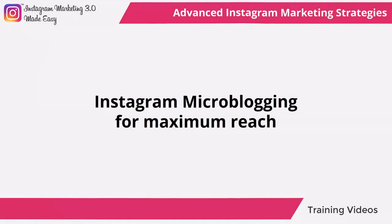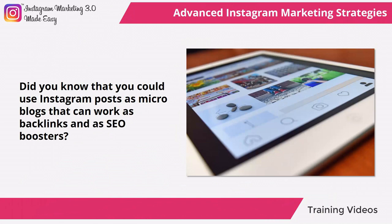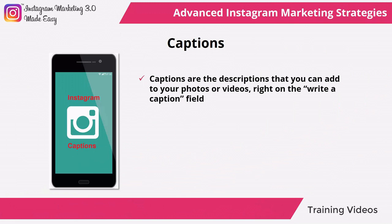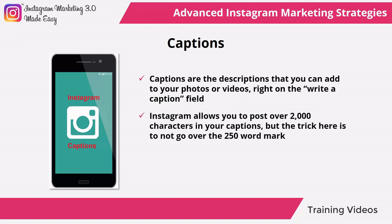Instagram microblogging for maximum reach. Did you know that you could use Instagram posts as microblogs that can work as backlinks and as SEO boosters? We're here to show you what strategies you need to apply in your posts to use them as your own optimization boosting platform. Captions are the descriptions that you can add to your photos or videos right on the write a caption field. The first rule about microblogging captions is that they have to be descriptive, brief, and simple. Instagram allows you to post over 2,000 characters in your captions, but the trick is to not go over the 250-word mark — ideally, keep it under 150 to 140 words. Use this brief caption for keywords relevant to your industry. If you need to add a web address, make sure to shorten it using a web service such as Bitly.